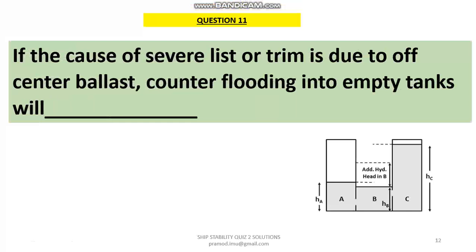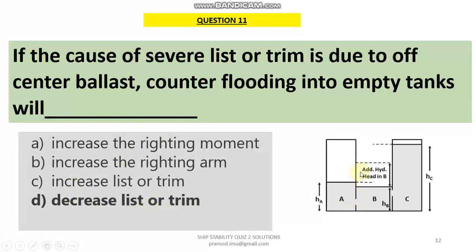Question 11: In the case of severe list or trim due to off-centre ballast, counter flooding into empty tanks will help. Counter flooding means — if a tank on the starboard side is flooded causing a list, flooding a geometrically opposite tank will result in a decrease of list or trim. Because your ship has developed a list or trim due to flooding, flooding a counter tank will reduce the list or trim and put you in a better position to manage these destabilising forces.